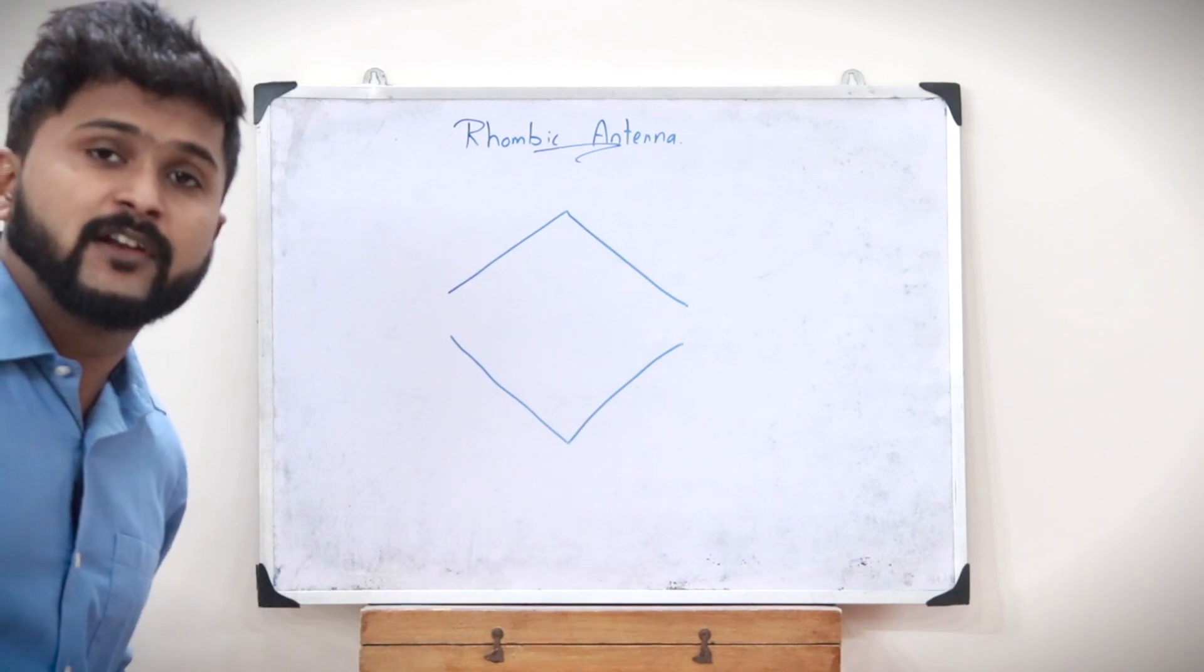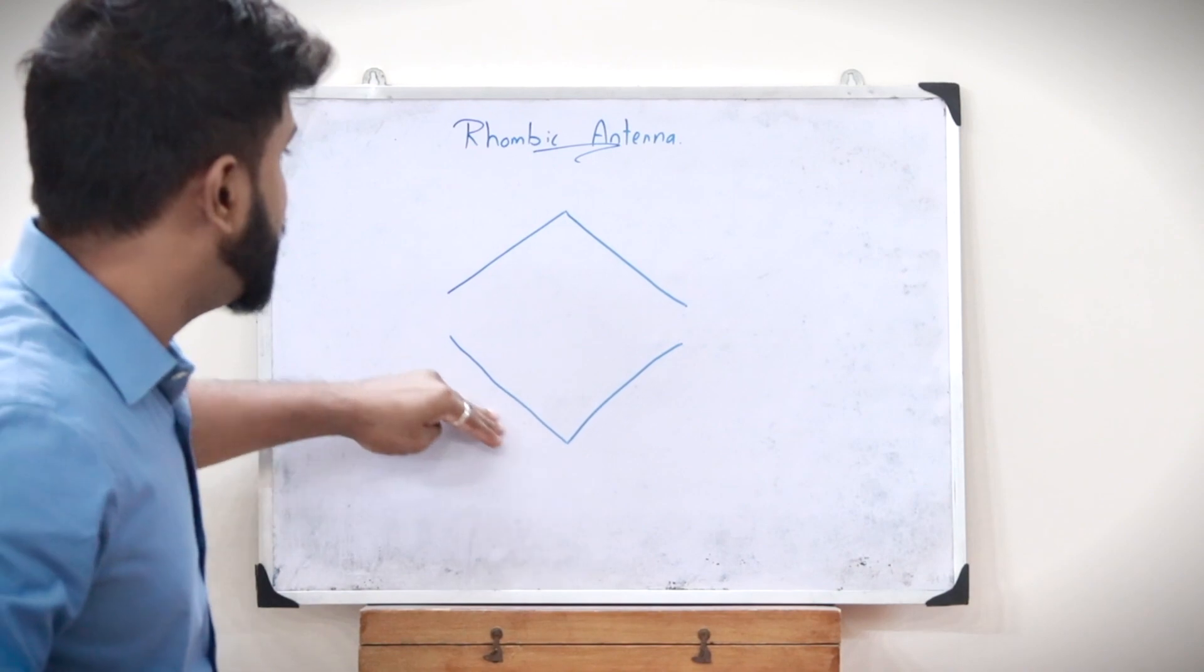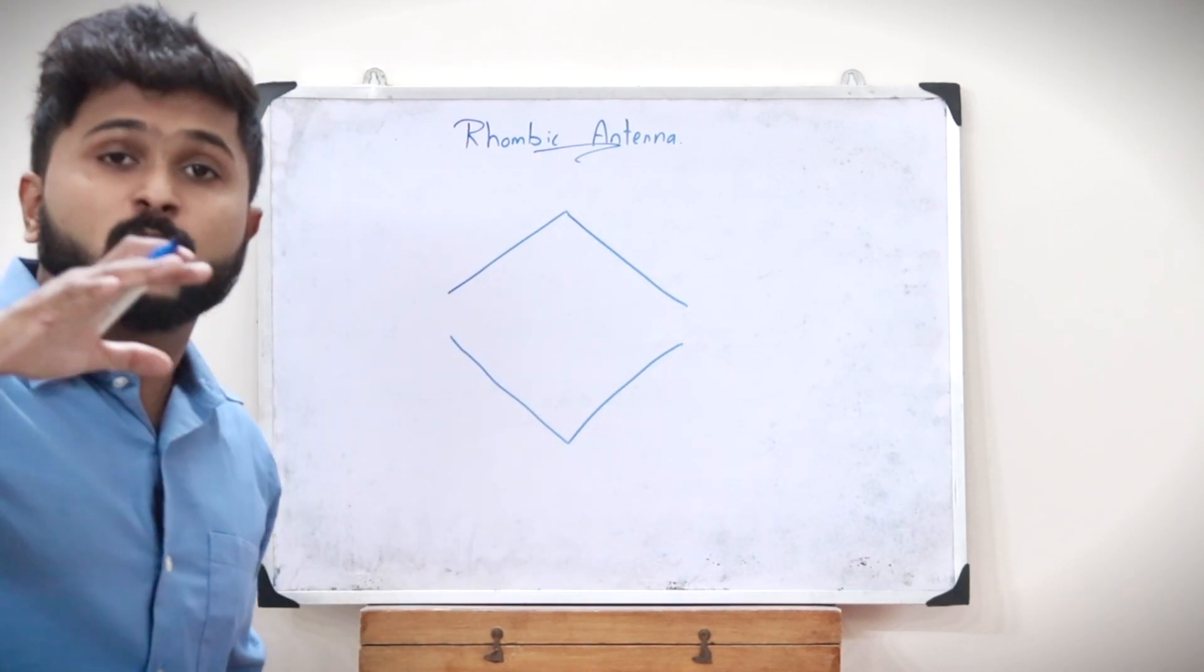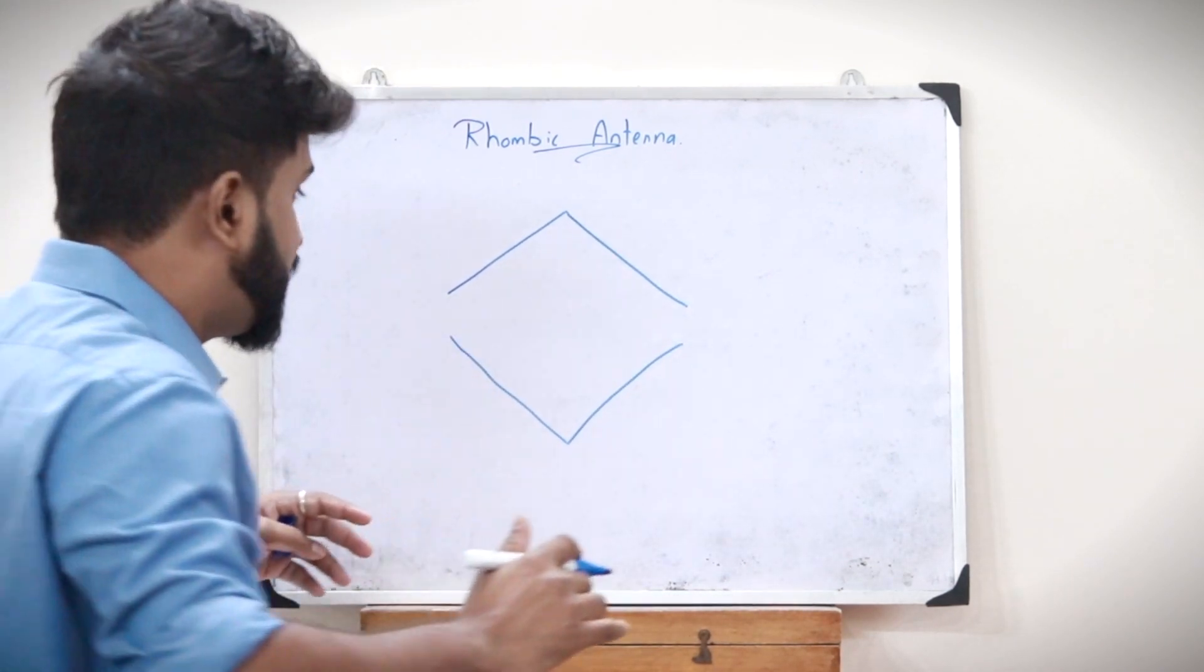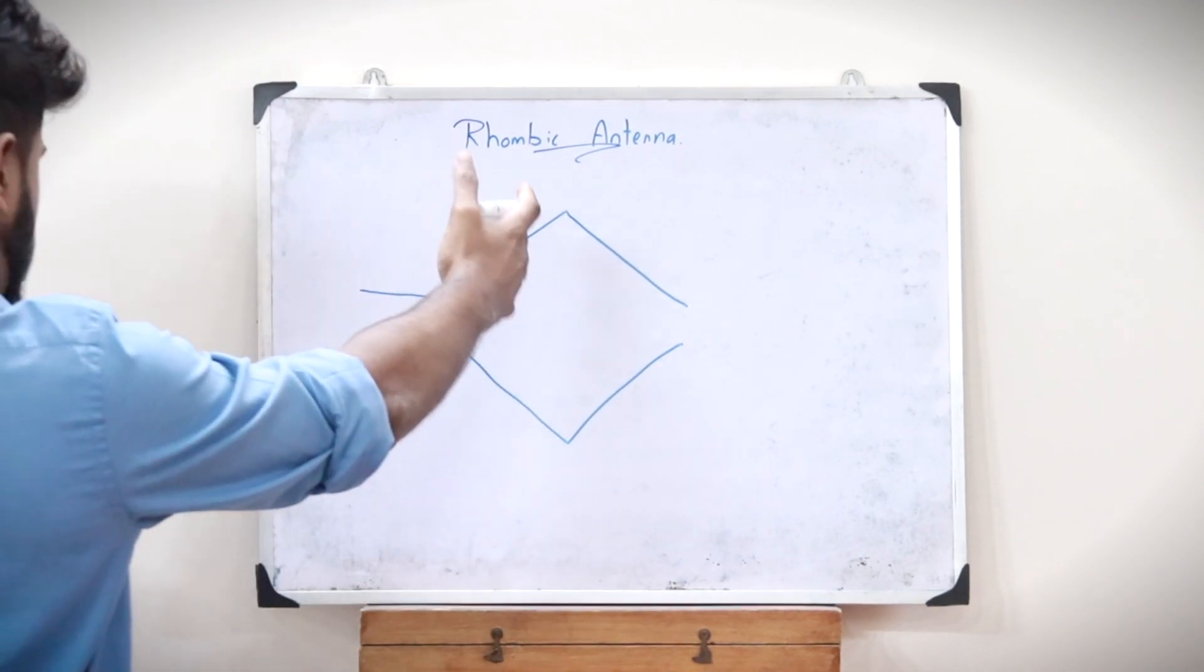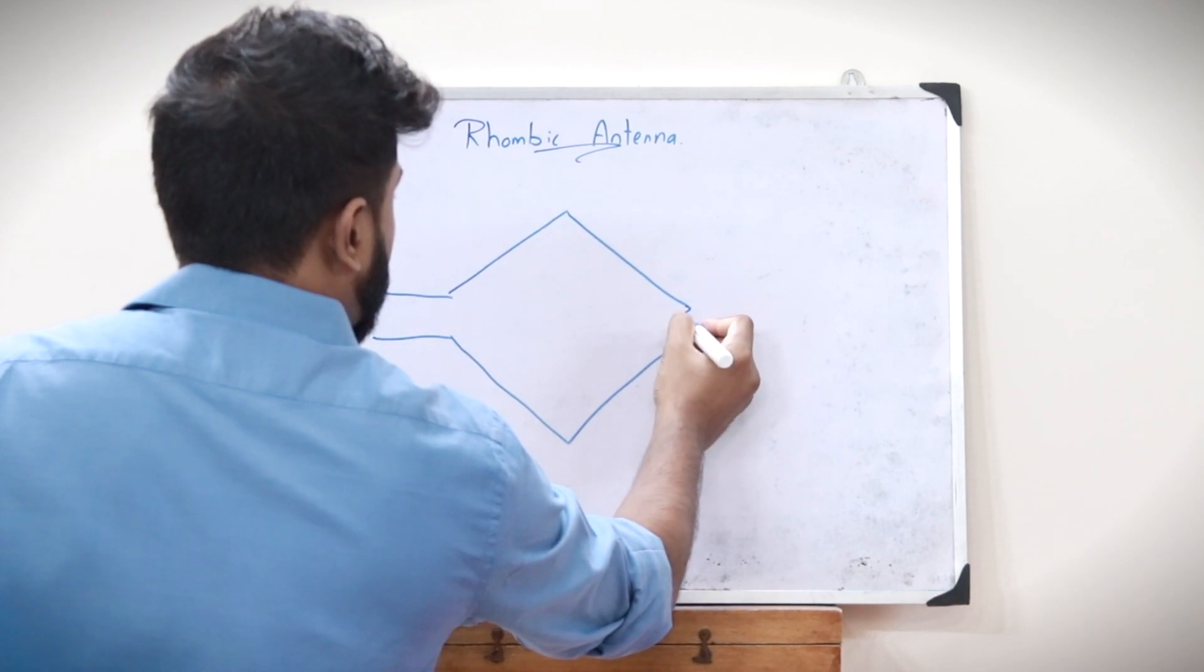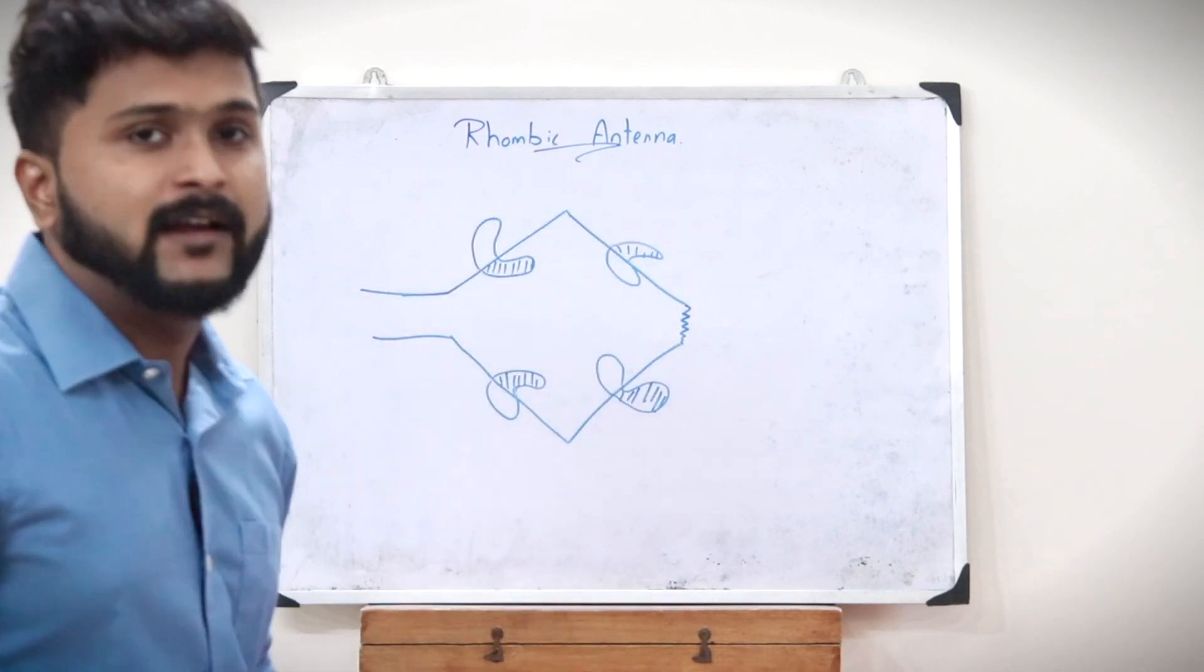So here this is a particular rhombus. It has four equal sides, representing the shape of a rhombus. Each side of this rhombic antenna is referred to as the length of that antenna. One end of this antenna is fed to a transmission line as a feeder, while the other end is terminated with a non-inductive resistor.